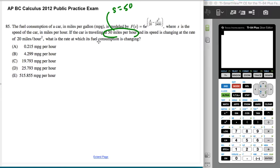And its speed is changing at a rate of 20 miles per hour, so that would be per hour squared, so that would be dS/dt is 20.